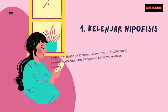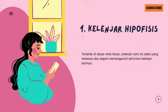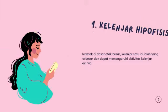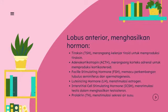Kelenjar hipofisis terletak di dasar otak besar. Kelenjar satu ini adalah terbesar dan dapat mempengaruhi aktivitas kelenjar lainnya. Kelenjar hipofisis terbagi menjadi tiga lobus dan masing-masingnya menghasilkan hormon yang berbeda-beda. Berikut adalah hormon yang dihasilkan oleh kelenjar hipofisis.